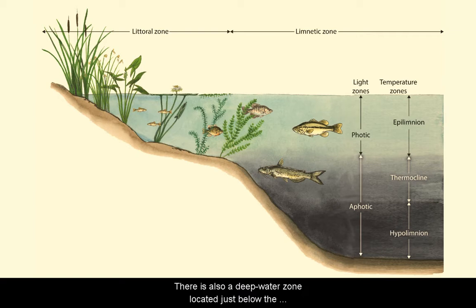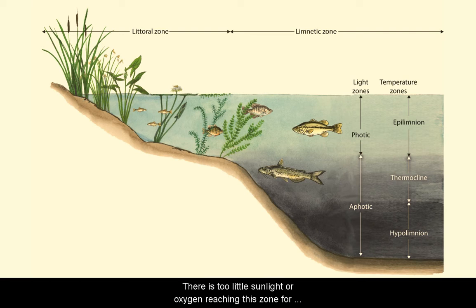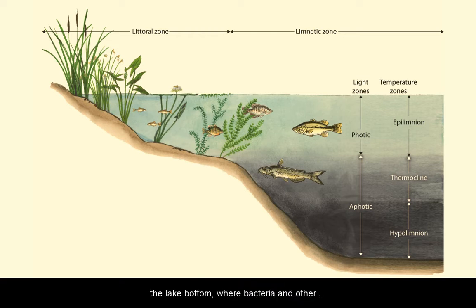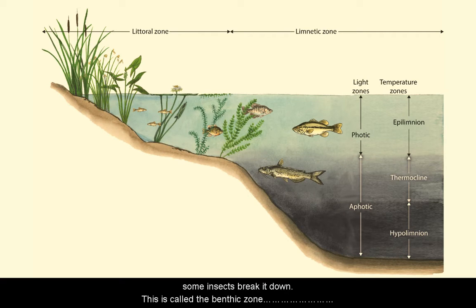There's also a deep water zone located just below the photic zone, called the aphotic zone. Here, there is too little sunlight or oxygen reaching this zone for plants or even algae to grow. Dead organic matter sinks to the lake bottom where bacteria and other decomposers, such as some worms and larval stages of some insects, break it down. This area is called the benthic zone.